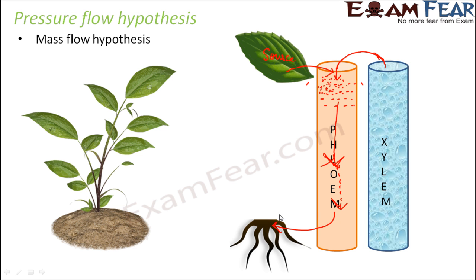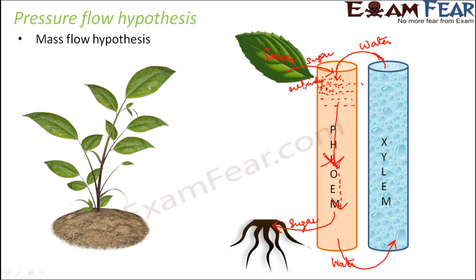At the sink, the sugar is actively transported into the sink cells. As sugar moves out, the solute concentration in the phloem decreases and the water potential increases. As a result, water moves back from the phloem into the xylem by osmosis. Both the movement of water into the phloem and back into the xylem occur by diffusion or osmosis, while sugar is actively transported.